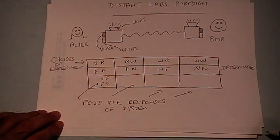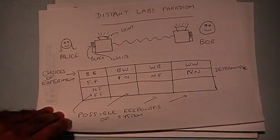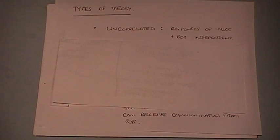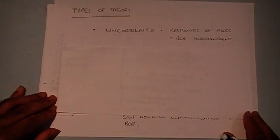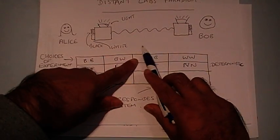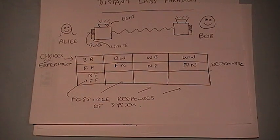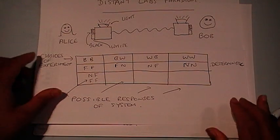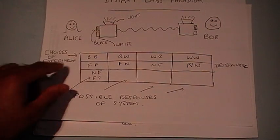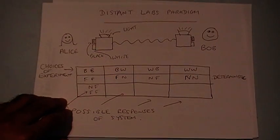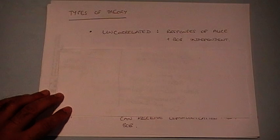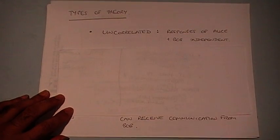Beyond deterministic or non-deterministic, there are also different types of classification of these theories. You could have an uncorrelated theory, where despite the fact that these two machines were prepared at the same place and then distributed, their behaviour is completely independent — the way Alice's machine responds is completely independent of Bob's choices.